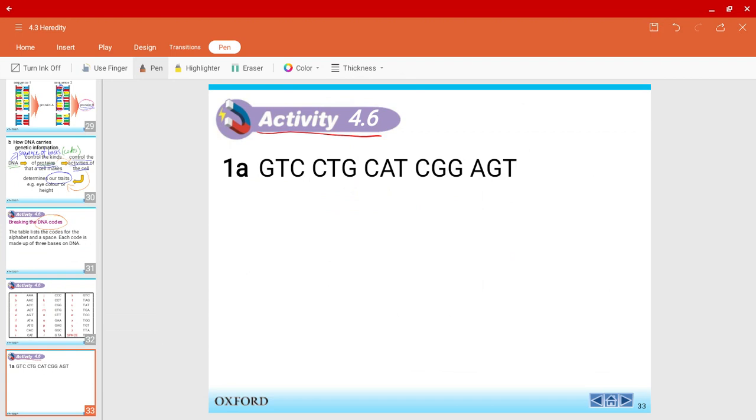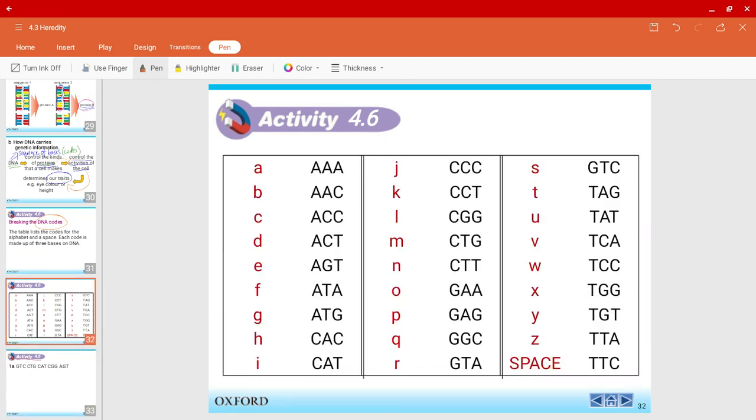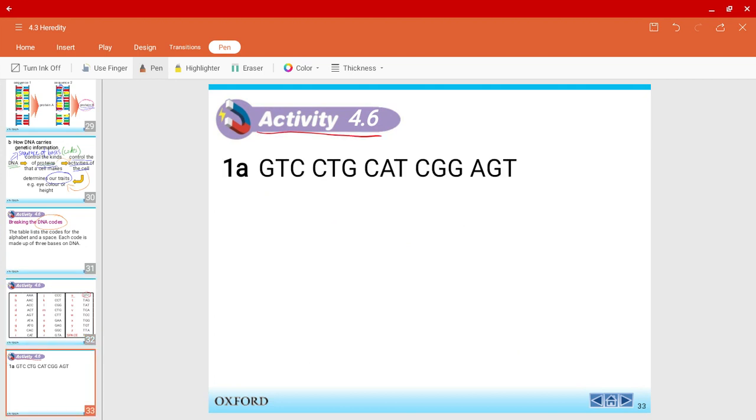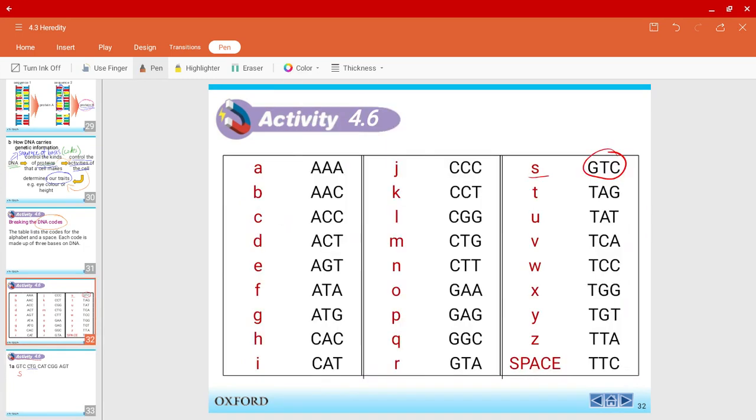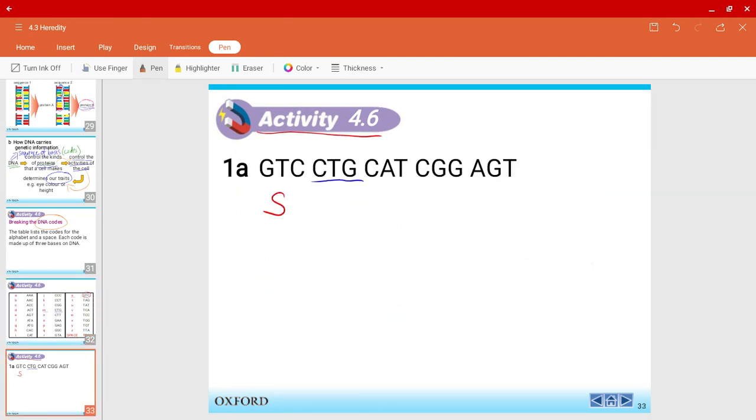So, first off, we have the code. We have the bases, GTC. So, we go back to the table and look for GTC. GTC is over here. And the code I get is the letter S. So, over here, I'm going to write down the letter S down here. And the next thing, same thing, is CTG. So, I'm going to go back, look for the table, and find where is CTG. CTG is over here. And the code I get is the letter M. So, over here, I got M.